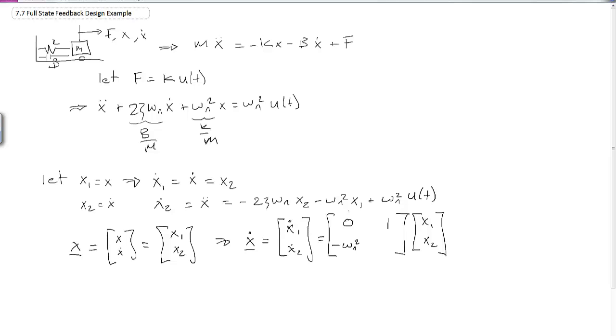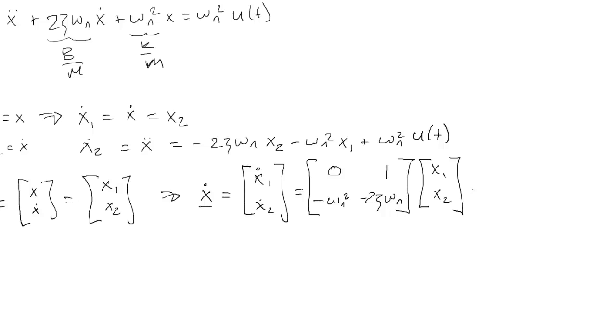Then we have to add in the input to the system, so I have 0 and omega n squared, all times u(t). We see that the state matrix A is given here, and here's the input matrix B to the system.